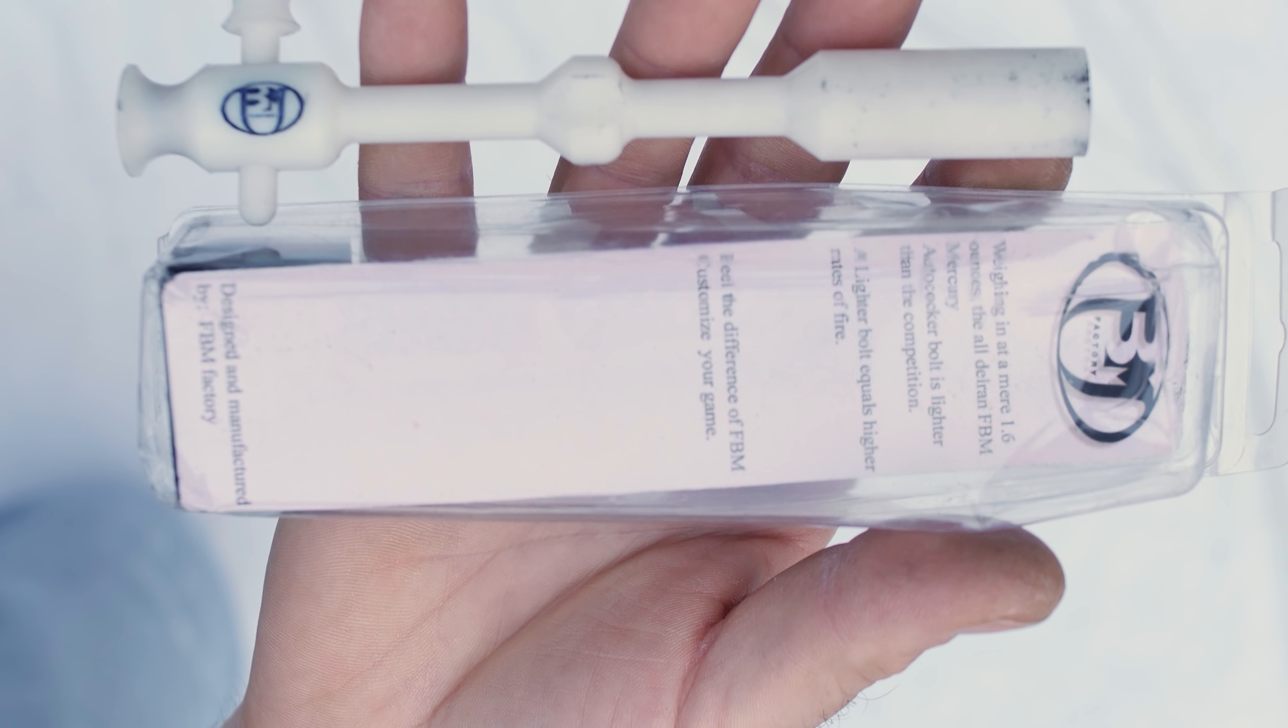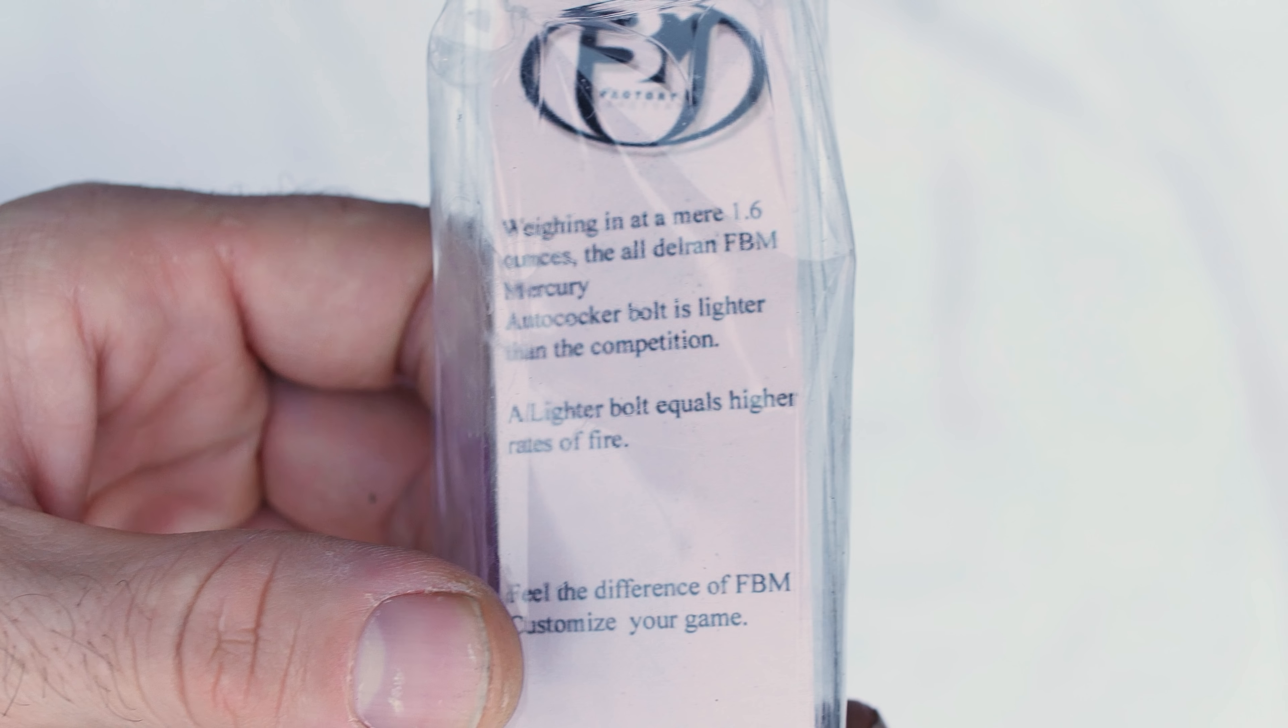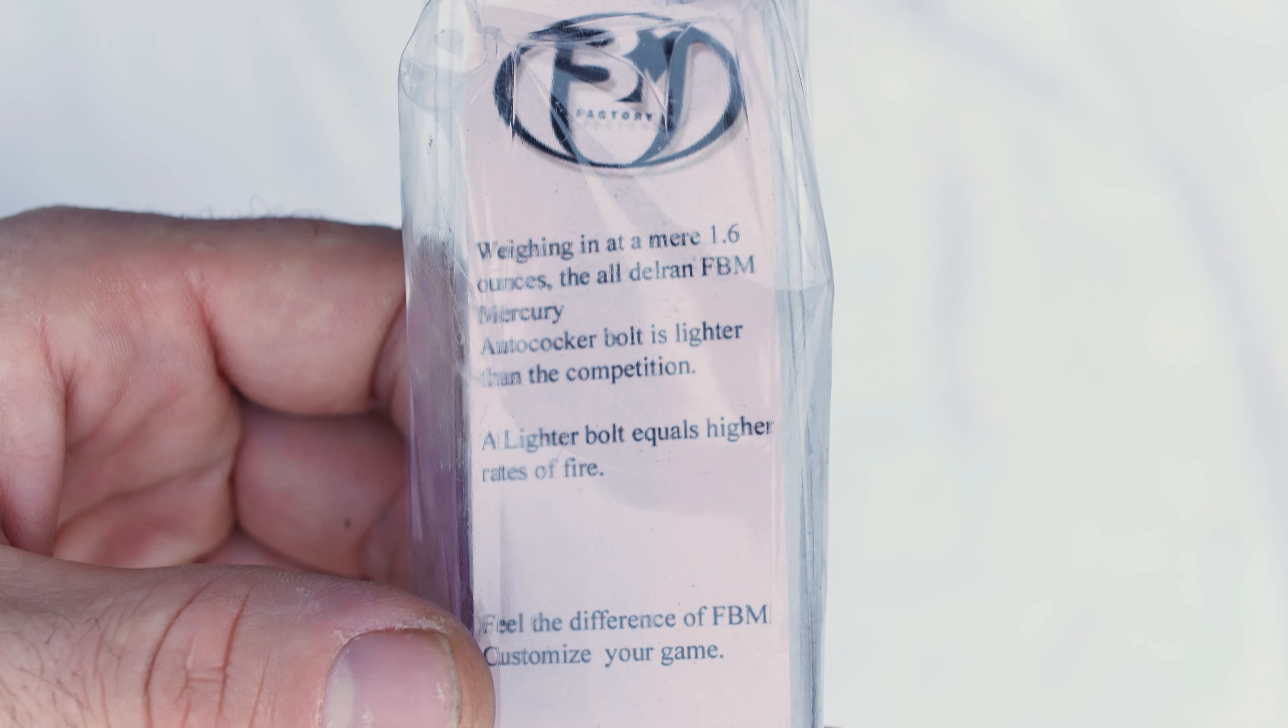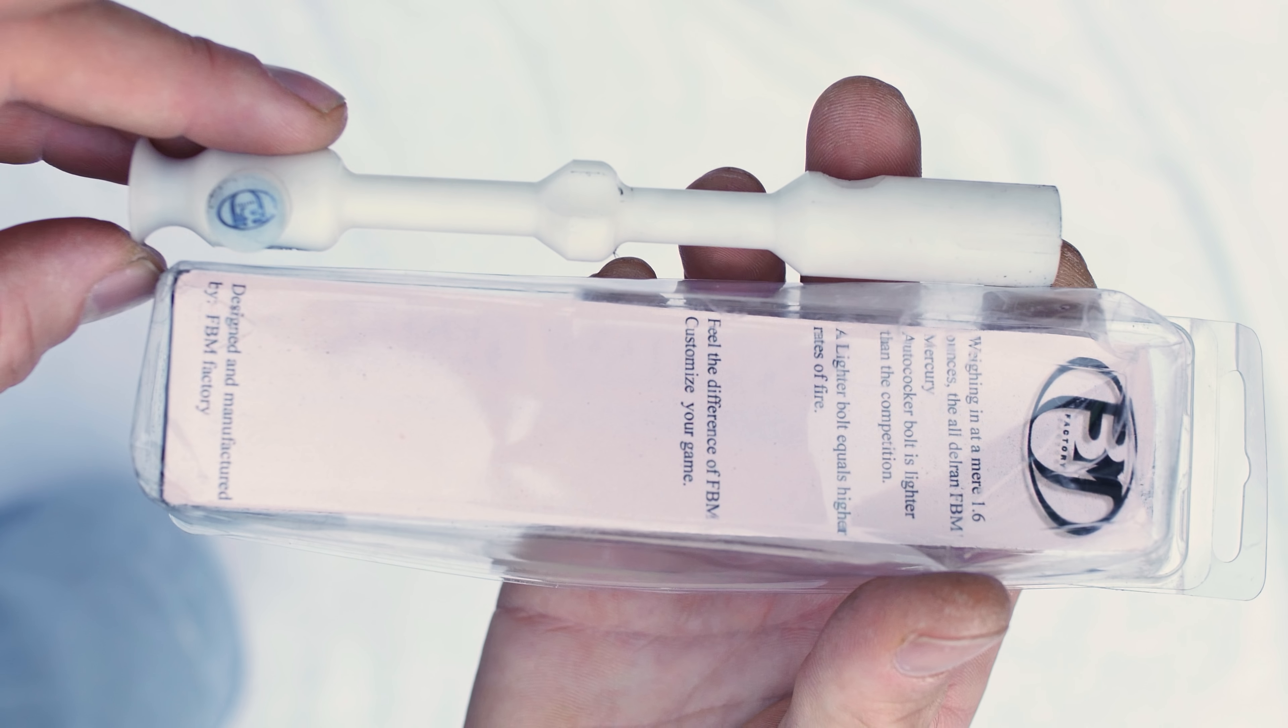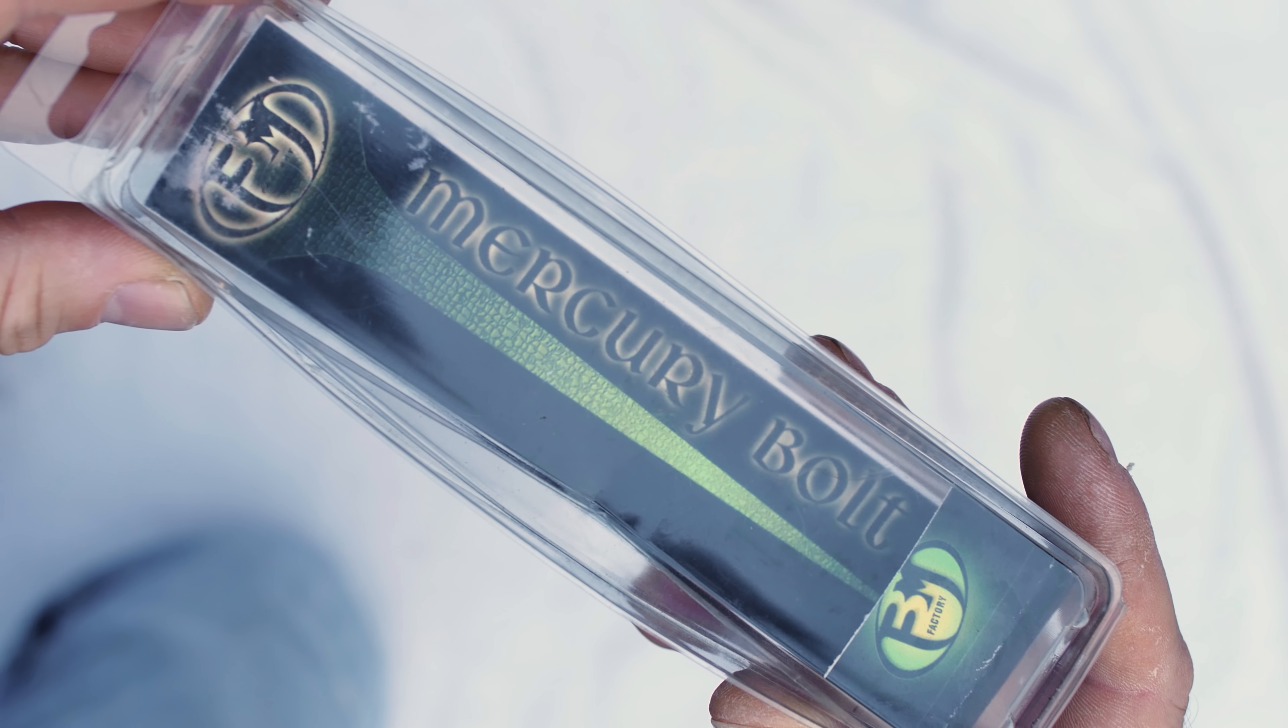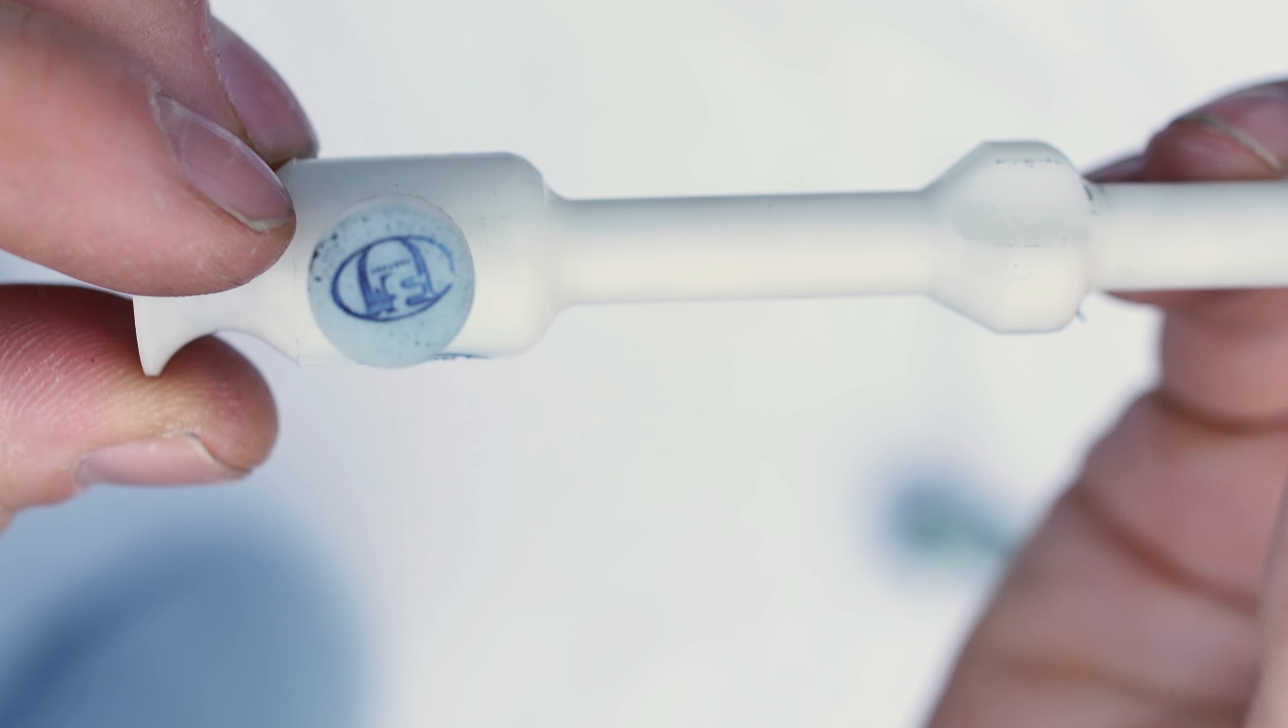Reading the instructions on back, or the advertisement on back, essentially it says: weighing in at a mere 1.6 ounces, the all-delrin FBM Mercury Autococker bolt is lighter than the competition. A lighter bolt equals higher rates of fire. Feel the difference of FBM. Customize your game. Designed and manufactured by FBM Factory. That is some proof that this was a lighter bolt done when FBM was doing their own machining and not something that Chrisogas did.